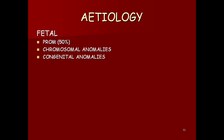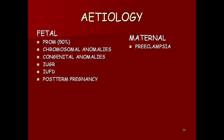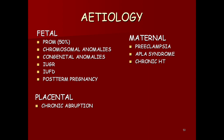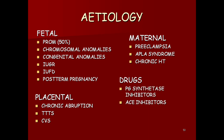Etiology of oligohydramnios — fetal causes: premature rupture of membranes, chromosomal anomaly, congenital anomalies, IUGR, intrauterine fetal death, post-term pregnancy. Maternal causes include eclampsia, antiphospholipid syndrome (APLS), chronic hypertension, chronic abruption, twin-to-twin transfusion syndrome, cardiovascular abnormalities. Note: CVS here refers to chorionic villus sampling, not cardiovascular. Drugs like NSAIDs, prostaglandin synthetase inhibitors, ACE inhibitors, and idiopathic causes are also listed.